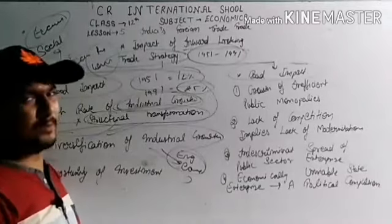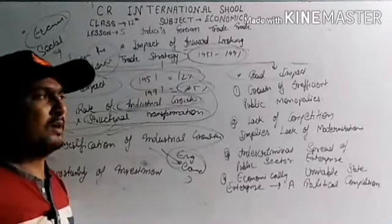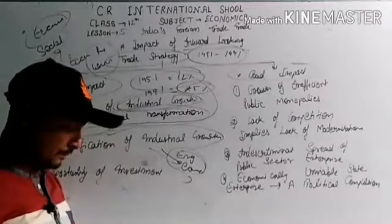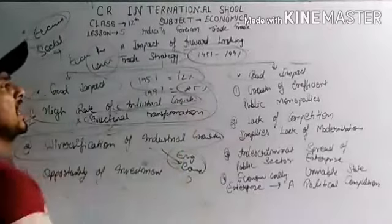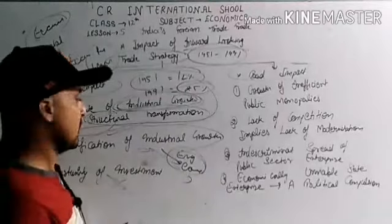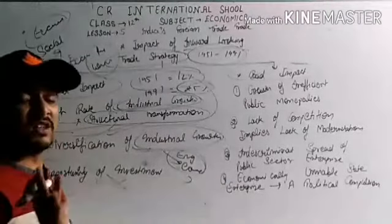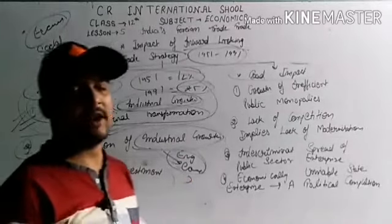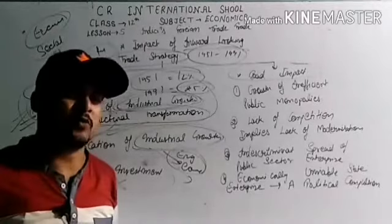The next good impact is the growth of the automobile industry in India — meaning two-wheeler, three-wheeler, and four-wheeler industries. The automobile industry also grew in that era. If the inward looking trade strategy had not been adopted, these industries would also have failed. So during that period there was a lot of diversification in industry: engineering goods, consumer goods, sunrise industry, and automobile industry all grew. There was also a new opportunity for investment and industrialization in that period.